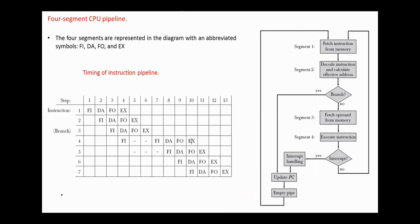In the timing diagram, the segments are represented by the symbols: FI for fetch, DA for decode and calculate effective address, FO for fetch operand, and EX for execute. It is also assumed that the computer has two memory modules — one for instructions and one for data — so that access to memory in the fetch instruction and fetch operand phases can be performed at the same time.